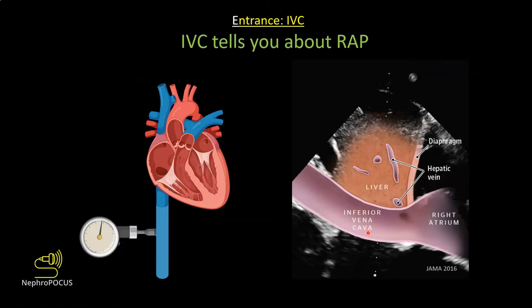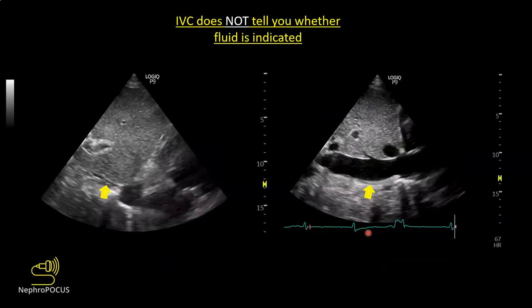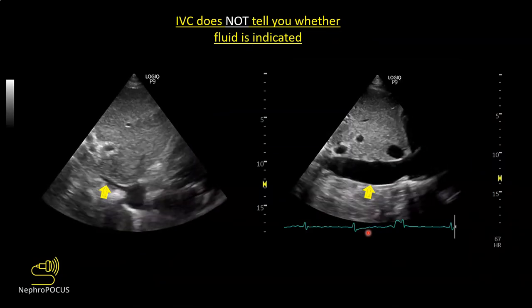The next E is entrance — the inferior vena cava. The IVC is a tube that goes to the right atrium, so it gives an estimate of right atrial pressure, in other words central venous pressure. We care about it because high right atrial pressure indicates resistance to venous return. Kidney perfusion depends on both inflow and outflow, and right atrial pressure is the outflow pressure of the renal perfusion pressure limb — elevated CVP reduces renal perfusion.